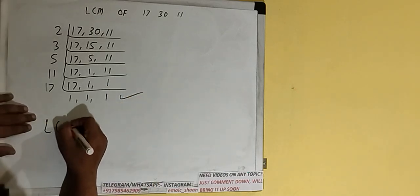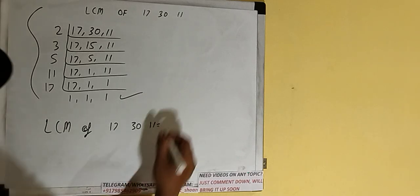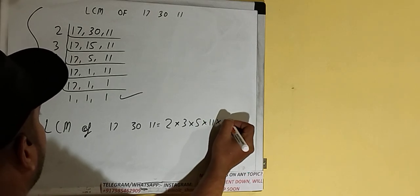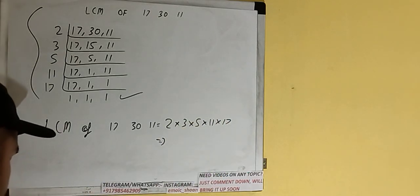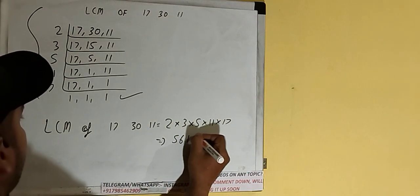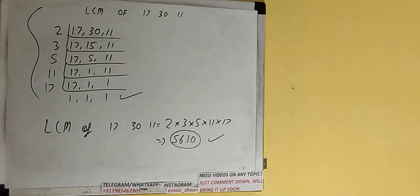Now the last thing to do: the LCM of 17, 30, and 11 is found by multiplying whatever we have on the left-hand side — that is 2 × 3 × 5 × 11 × 17. So the answer would be 5610. The LCM is 5610.